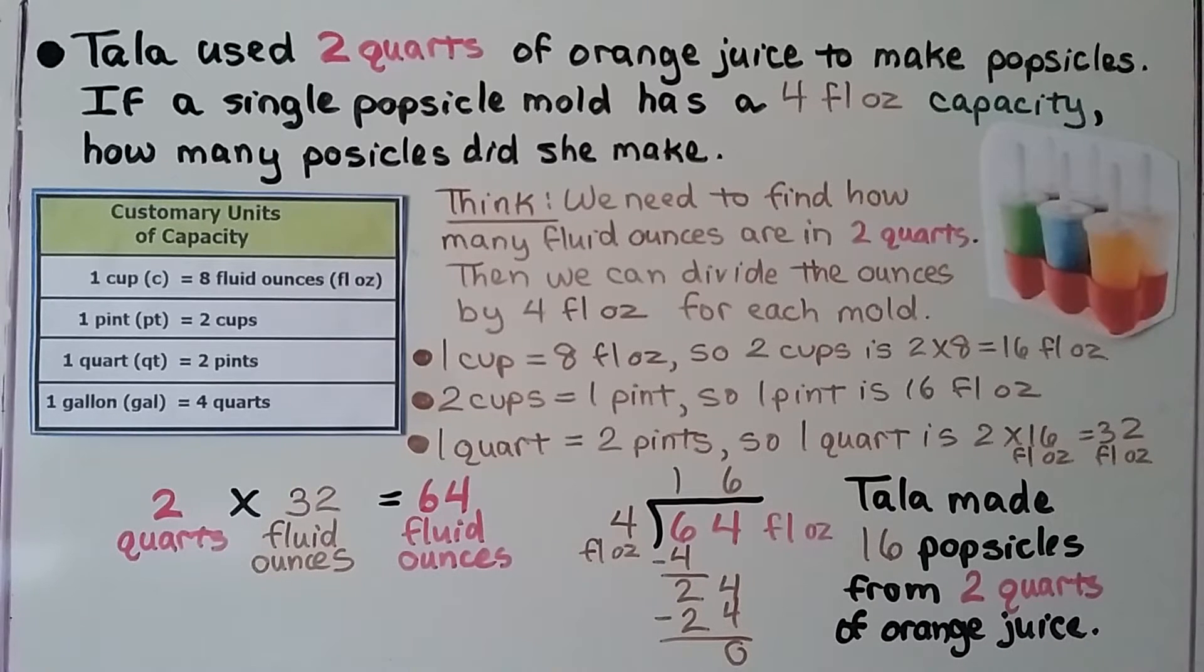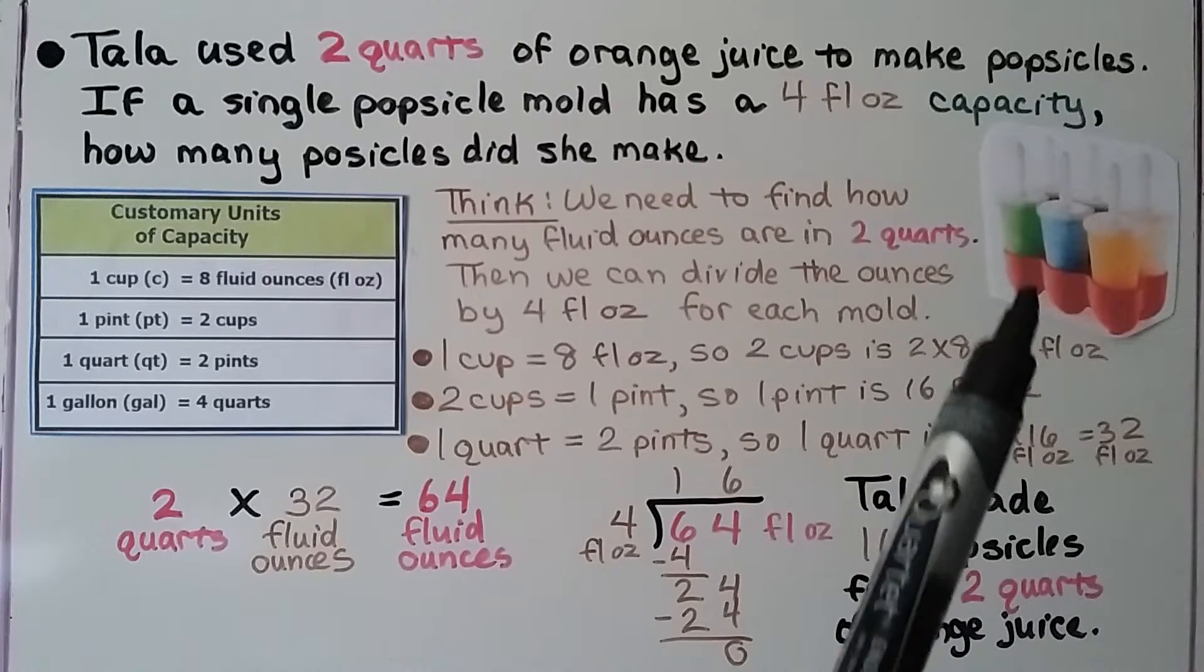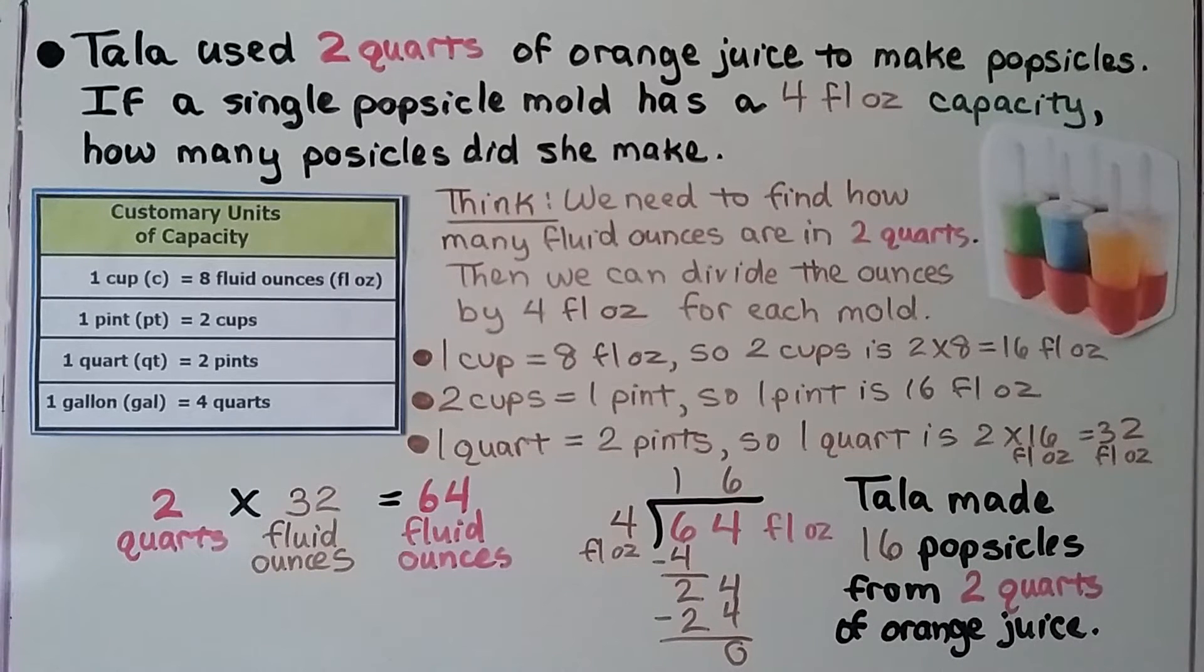Tala used two quarts of orange juice to make popsicles. If a single popsicle mold, just one of them, has a four fluid ounce capacity, how many popsicles did she make? We think we need to find how many fluid ounces are in two quarts.